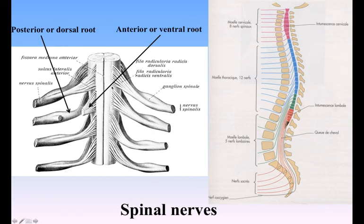31 pairs of spinal nerves spring from the Medulla Spinalis, each nerve having an anterior or ventral and a posterior or dorsal root, the latter being distinguished by the presence of an oval swelling, the spinal ganglion, which contains numerous nerve cells. Each root consists of several bundles of nerve fibers and at its attachment extends for some distance along the side of the Medulla Spinalis.